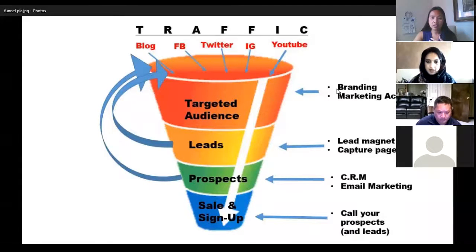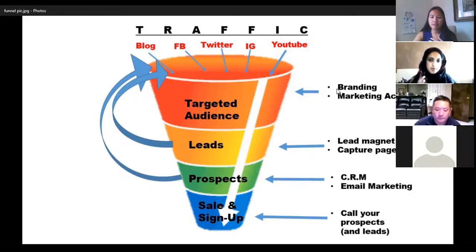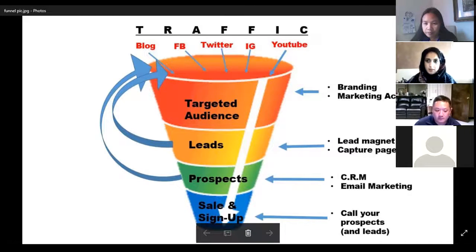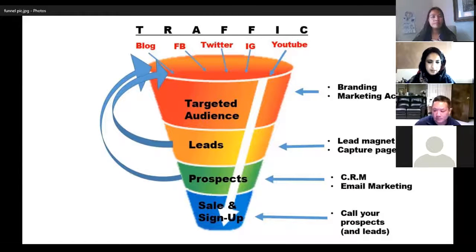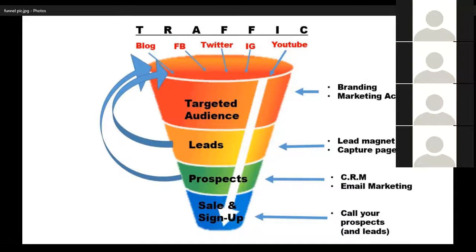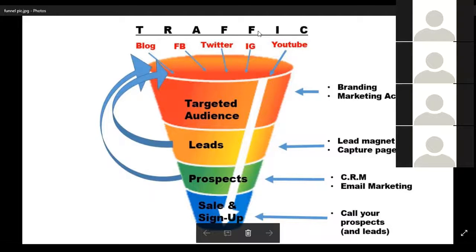There are four types of lead magnets to go through — some are similar, some are very different. You can set up an automated email through a web address, or do it manually to begin with, especially on Facebook. That's where you'll be building your rapport and engaging with your audience, but you can also do it on automation.